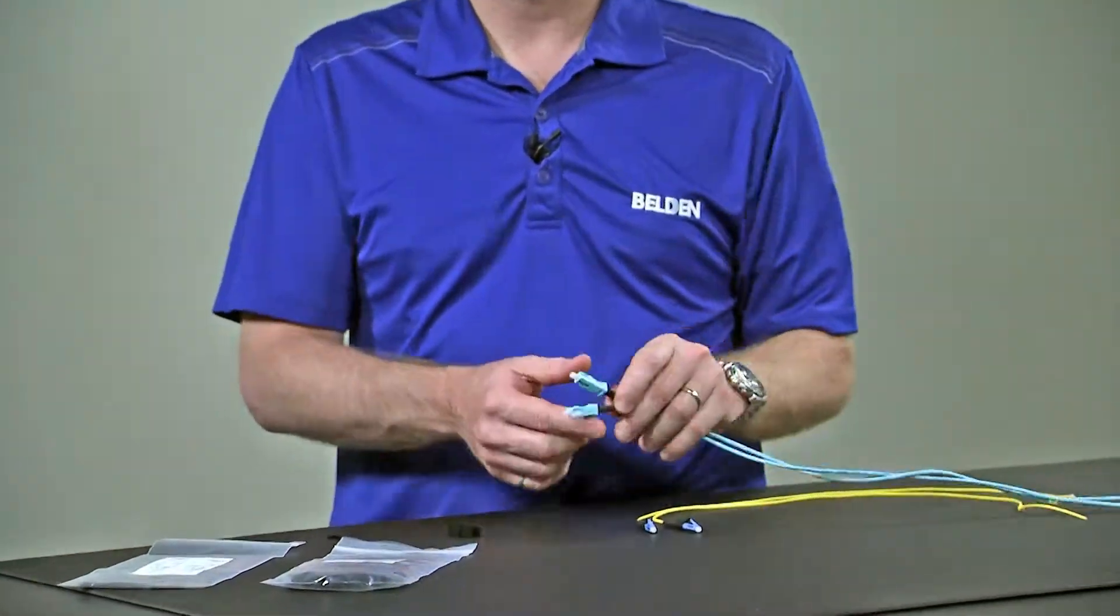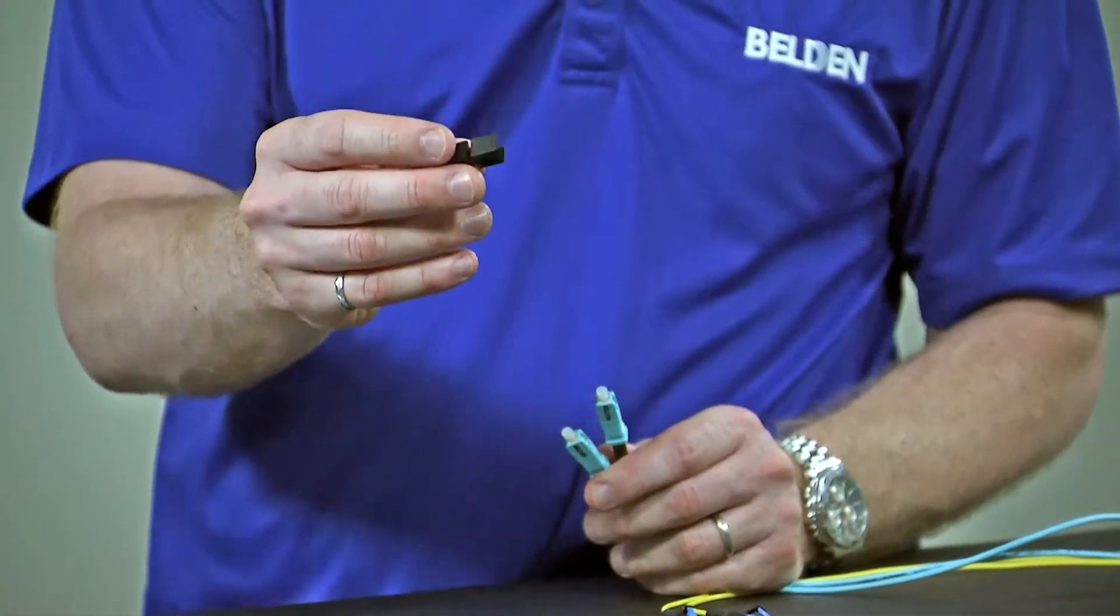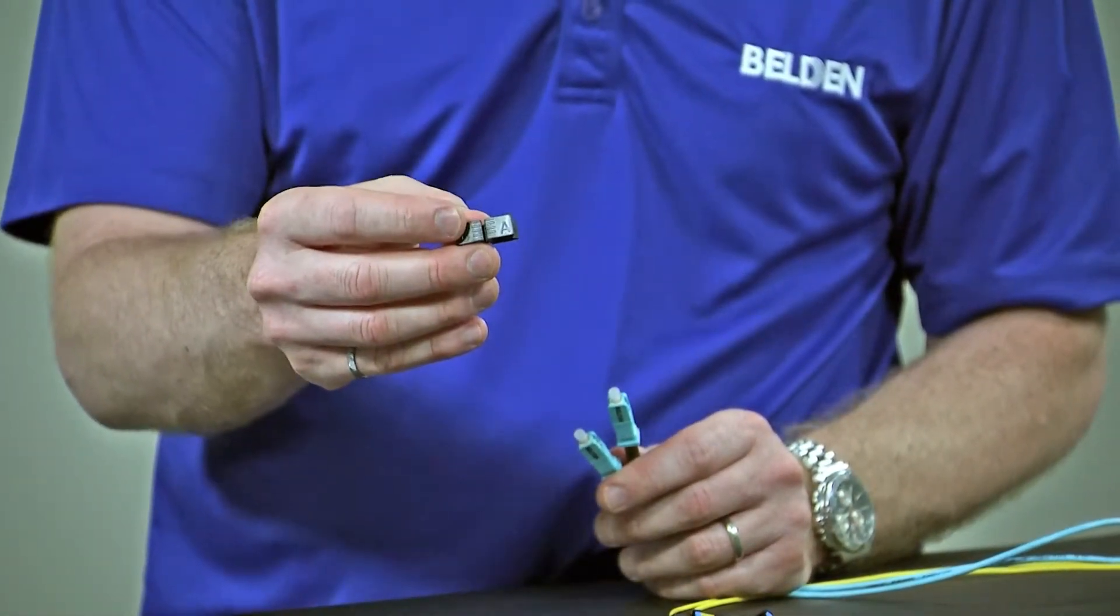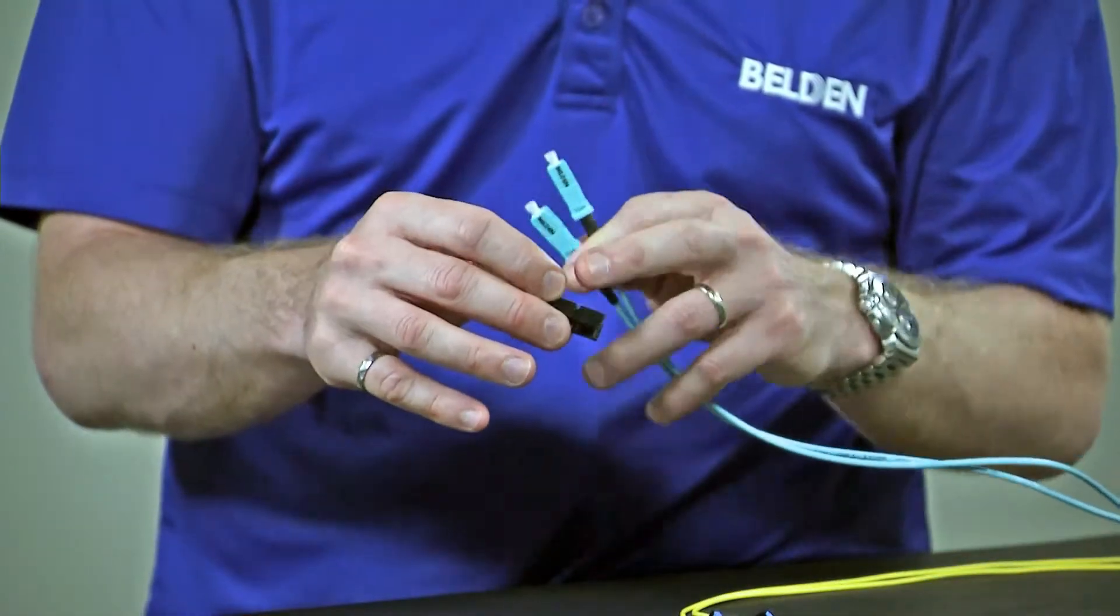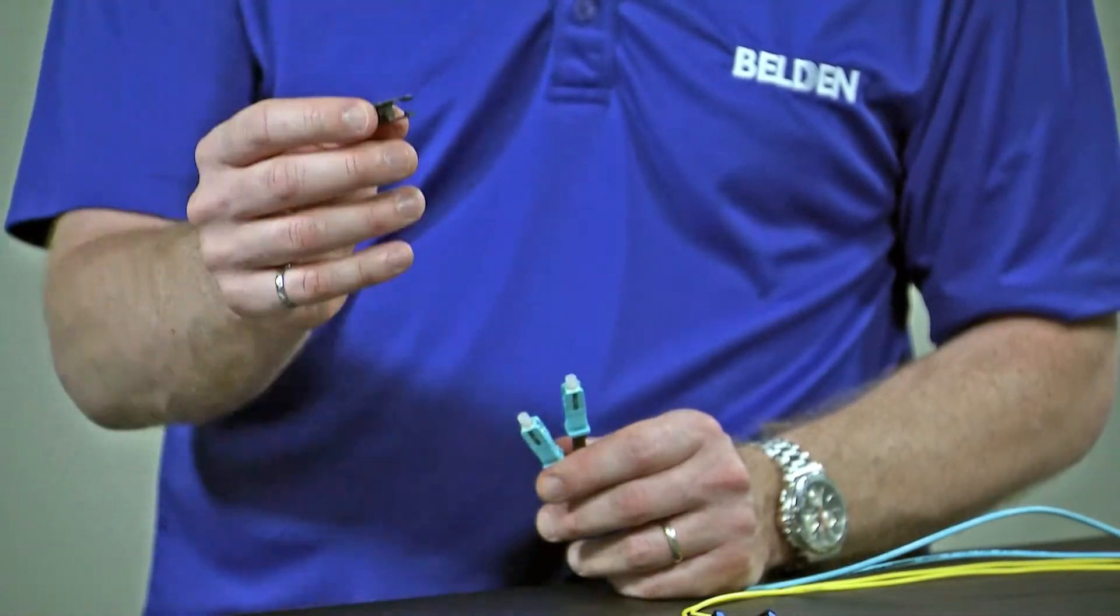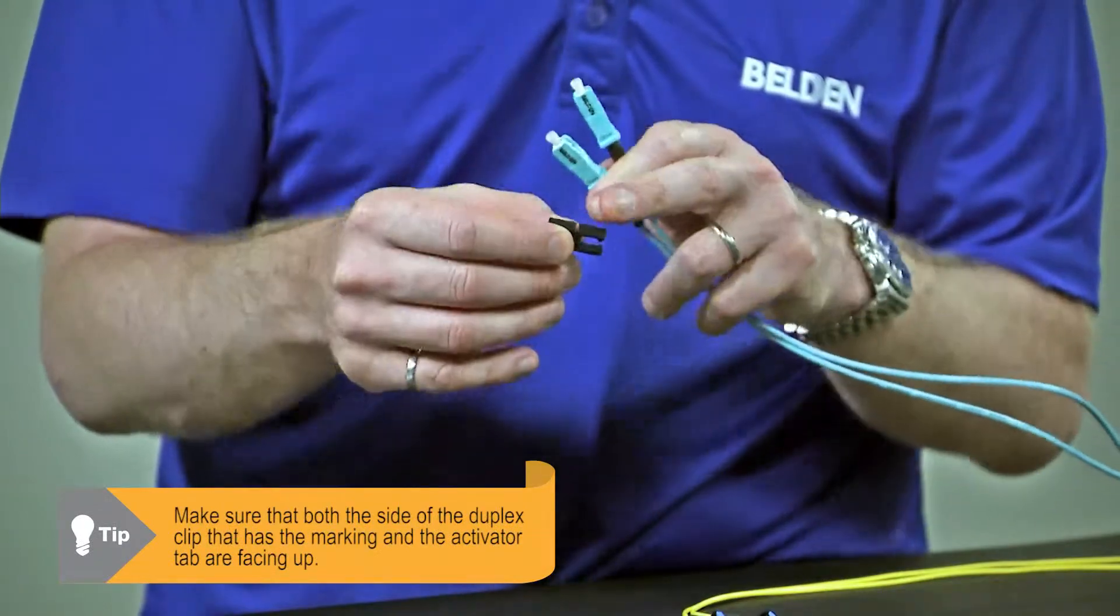I'm going to start with the SC type connectors. One side of the duplex clip has an A and a B marking on it, where the other side has no marking. I'm going to make sure that I have the side with the markings facing up.